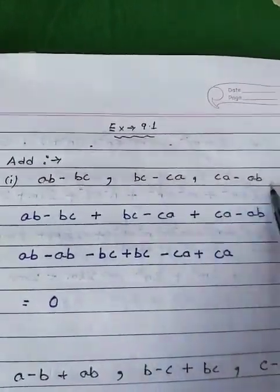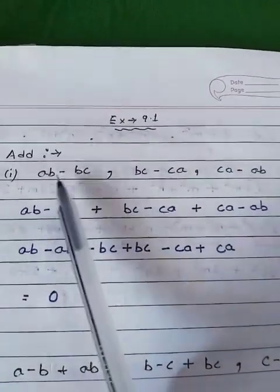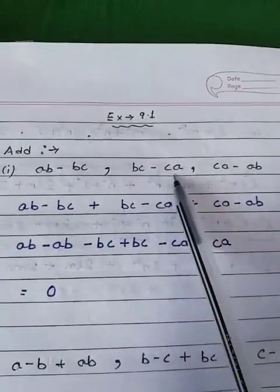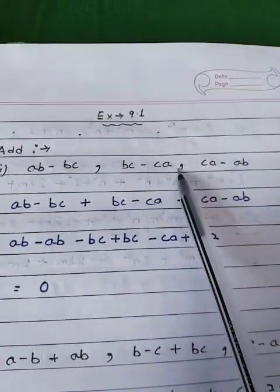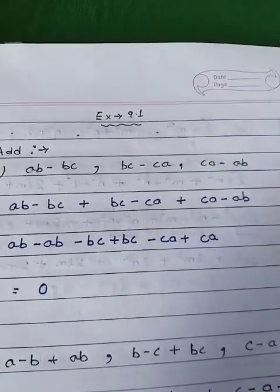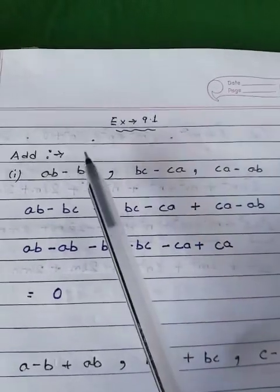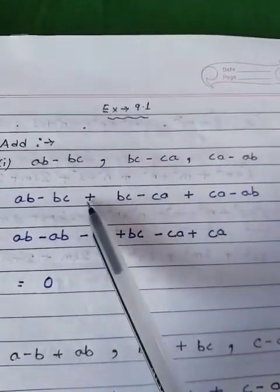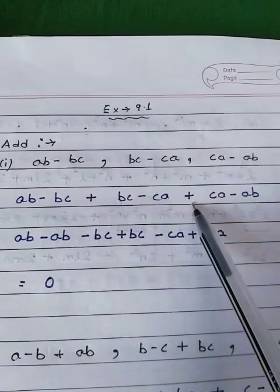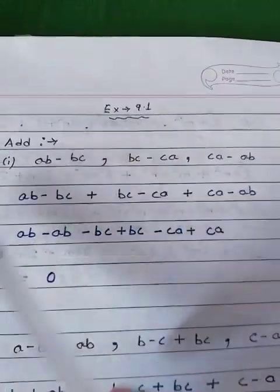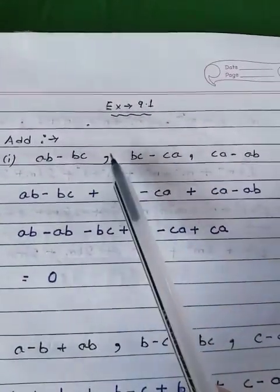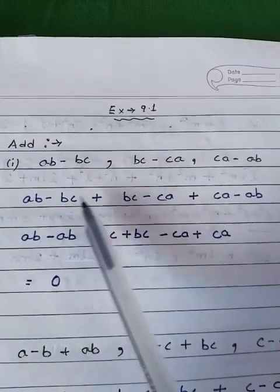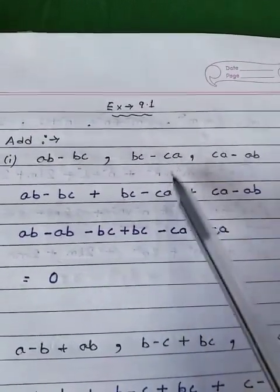Now, these are the things you have to add. In the question you see: ab minus bc, comma, bc minus ca, comma, ca minus ab. The first thing you have to do in addition is replace each comma with a plus sign, because you are doing addition. So I have written: ab minus bc plus bc minus ca...